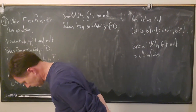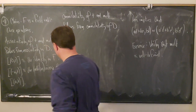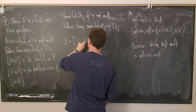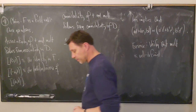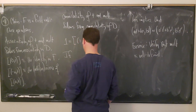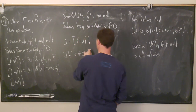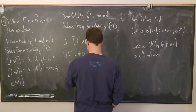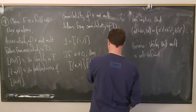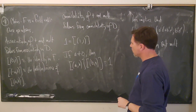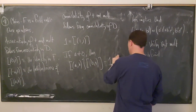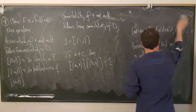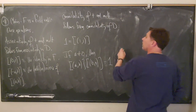The unity element is the equivalence class [1, 1]. For multiplicative inverses: if a ≠ 0, then [a, b] · [b, a] = [1, 1] = 1. That completes showing F is a field — every non-zero element has a multiplicative inverse.